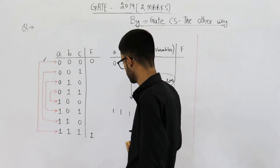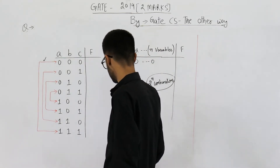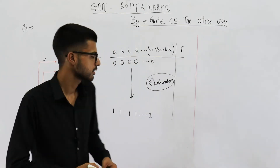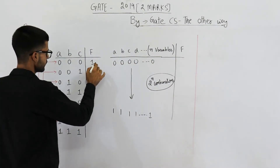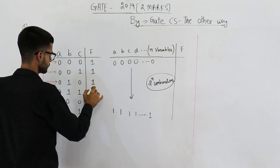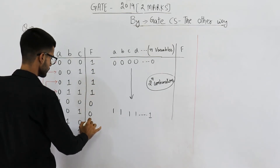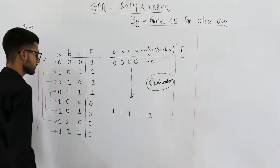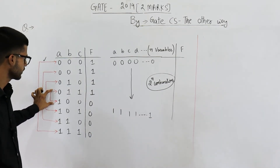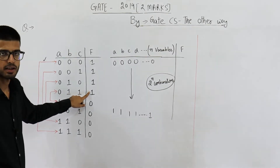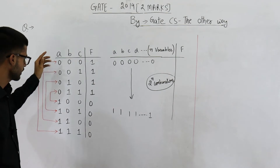Before finding how many such functions are possible, let me give an example of a self-dual function. Say all of these are ones and all of these are zeros — this function will be a self-dual function. You can see that out of each pair, only one of them is high. You can analyze it for all the pairs.